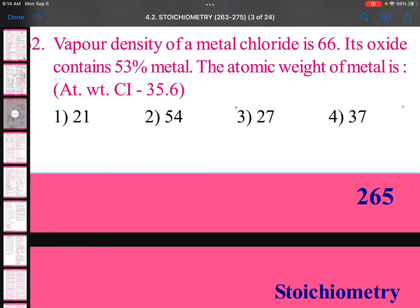This is an interesting question. Vapor density of a metal chloride is 66. Its oxide contains 53% metal. The atomic weight of the metal... atomic weight of chlorine is given as 35.6.